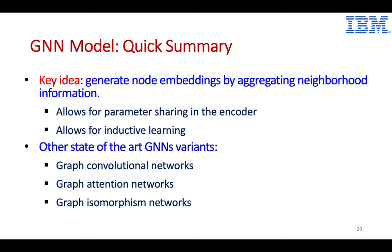To summarize graph neural networks: the key idea is generating node embeddings by aggregating neighborhood information. There are two advantages: first, since we learn an aggregation function, parameters are shared in the encoder; second, this allows inductive learning — very important as graphs change over time. This is a basic model, and many state-of-the-art GNN variants exist in the literature. The most important distinction between variants is how the aggregation function is defined. Popular variants include the Graph Convolutional Network, Graph Attention Network, and Graph Isomorphic Network.